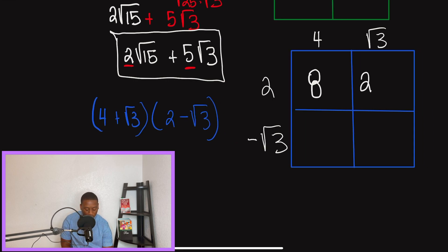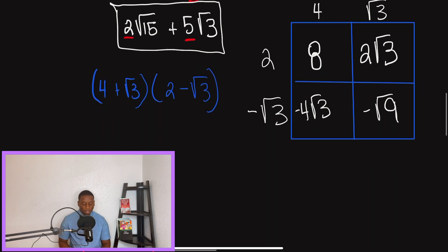So 2 times 4 is going to give me 8. 2 times radical 3 will give me 2 radical 3. 4 times negative radical 3 is going to give me negative 4 radical 3. And then negative radical 3 times radical 3 is going to give me negative radical 9. So now we've multiplied. And what I'm going to do now is I'm going to write it out in one single line so we can see if there's anything for us to combine.